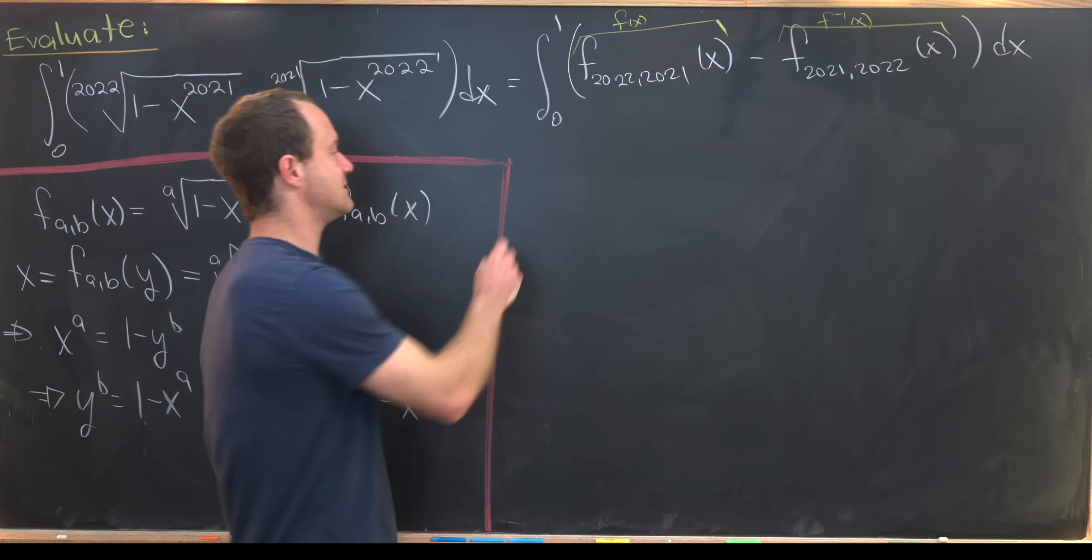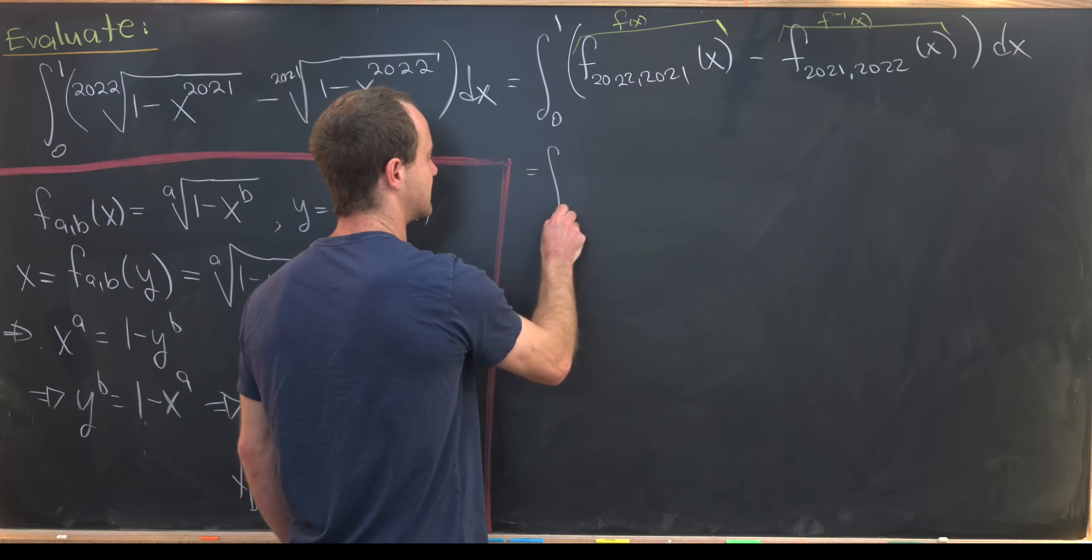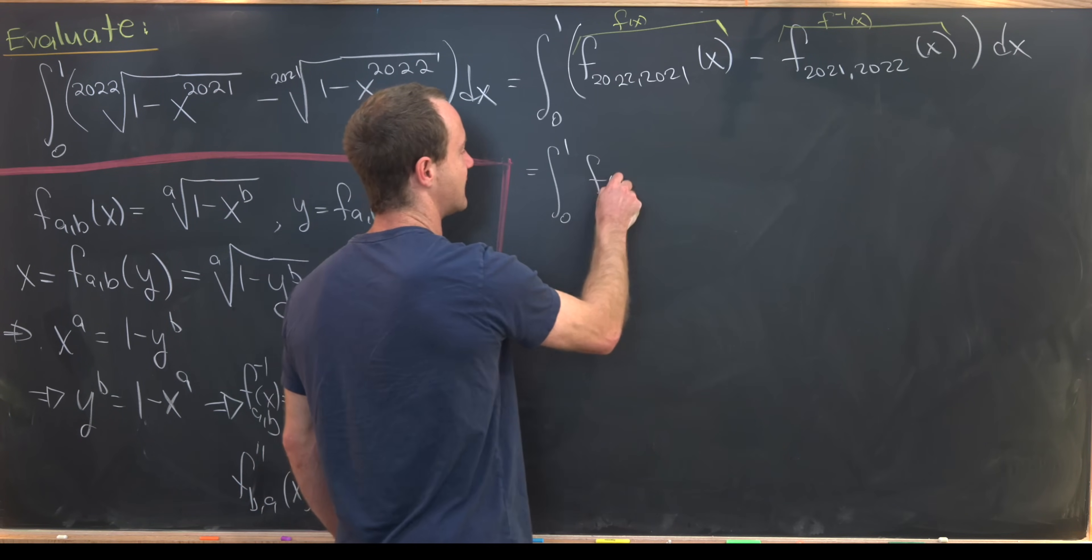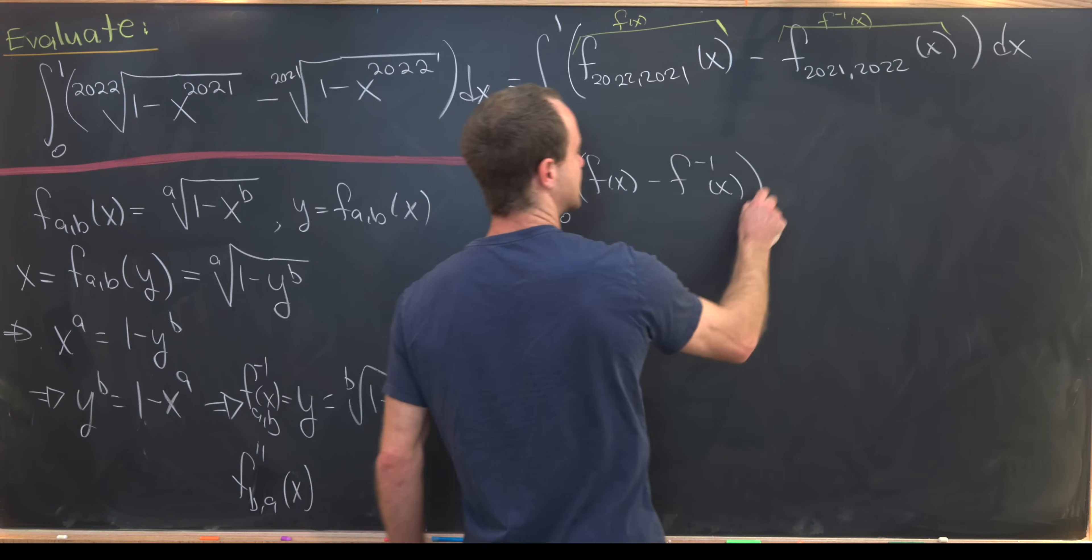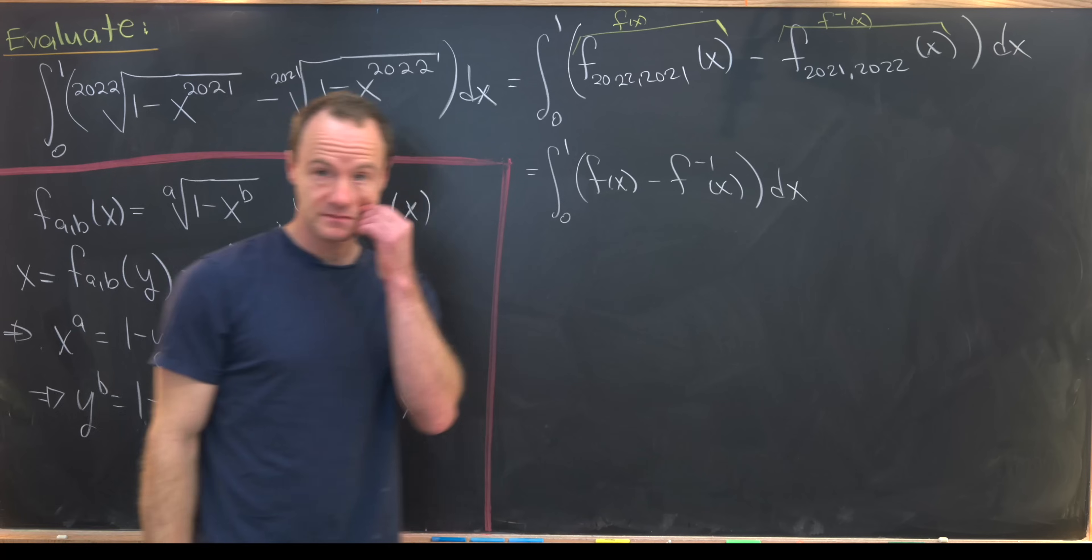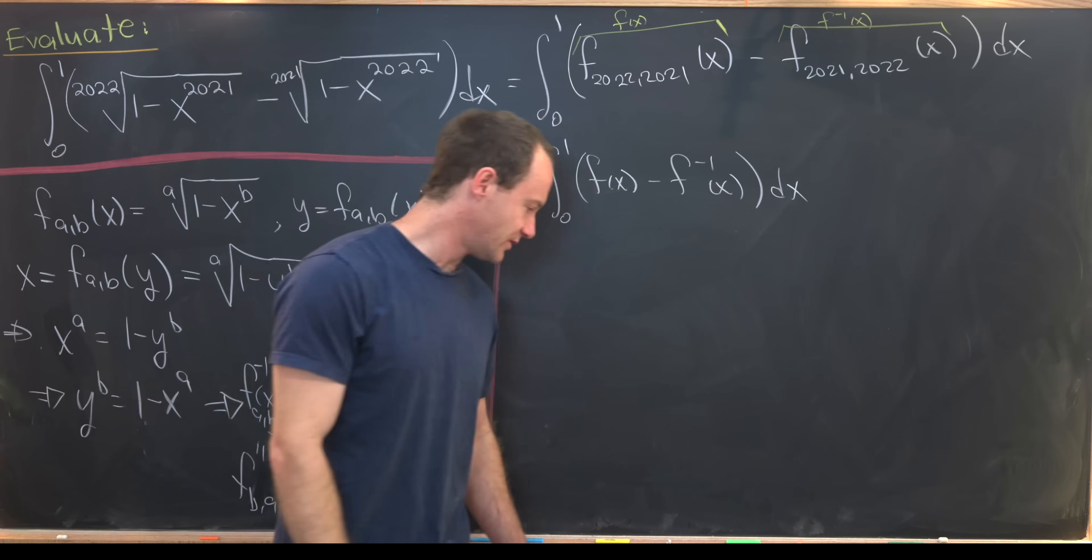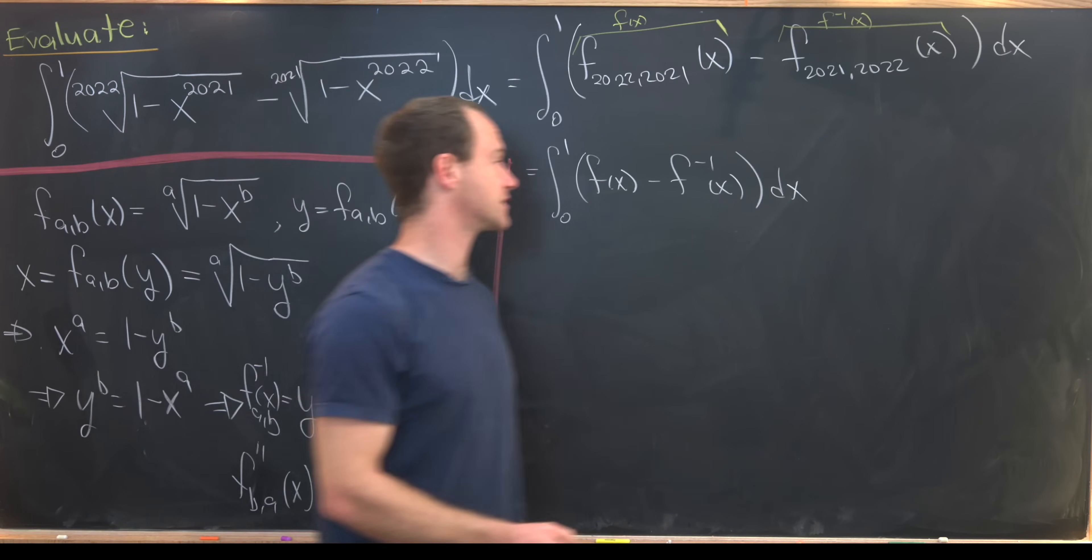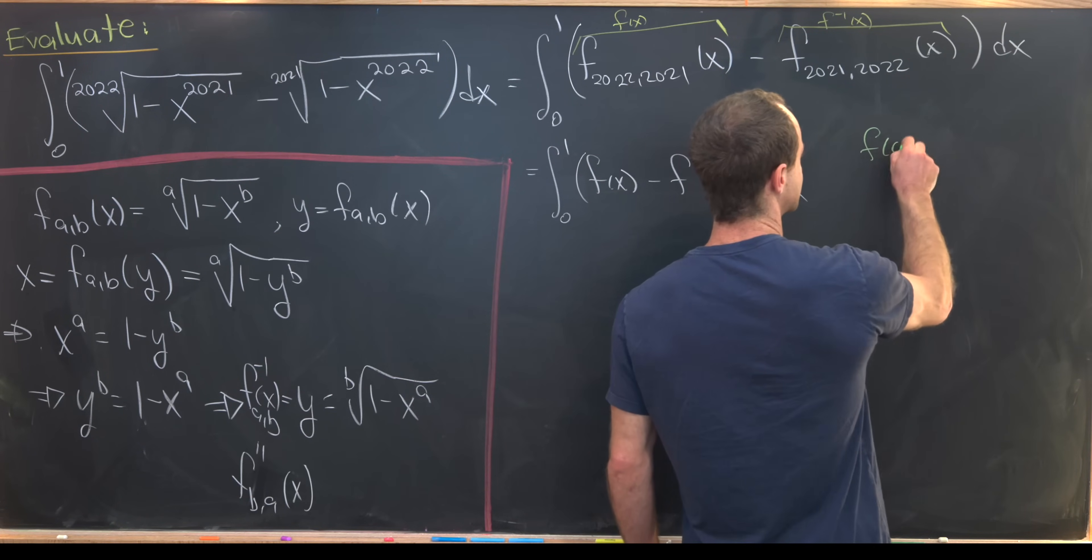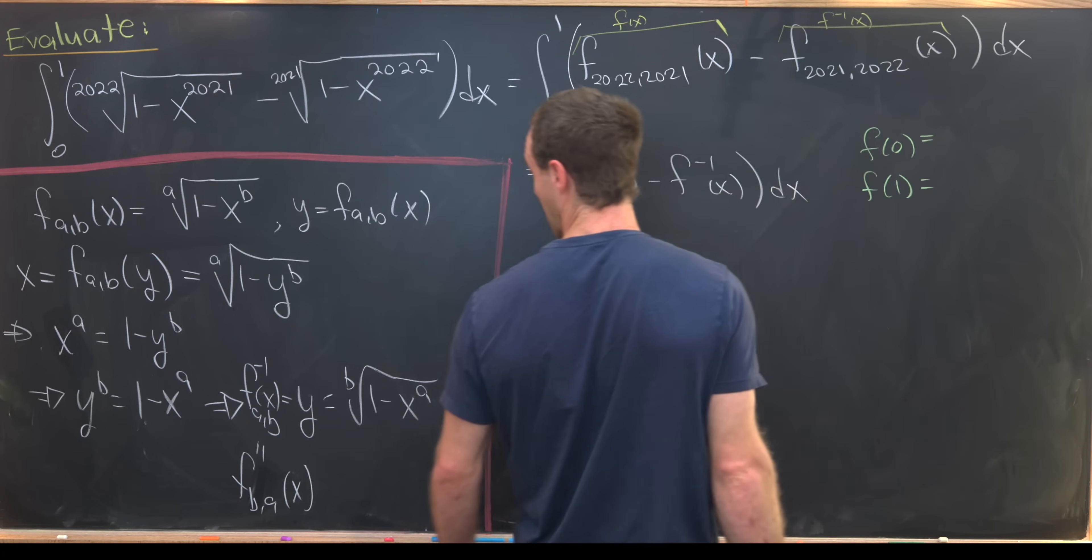So that means we're trying to find the integral from 0 to 1 of f of x minus f inverse of x dx. And while we're at it, we probably want to notice some of the special values of f and f inverse.